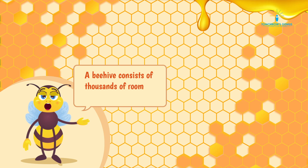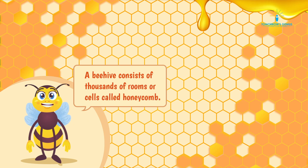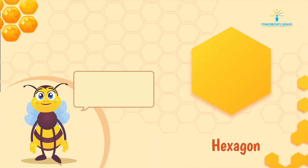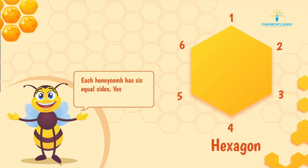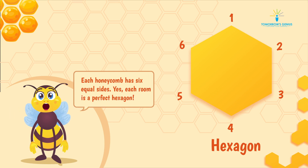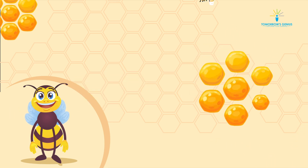A beehive consists of thousands of rooms or cells called honeycomb. Each honeycomb has six equal sides. Yes, each room is a perfect hexagon.